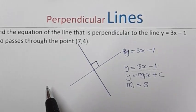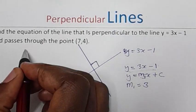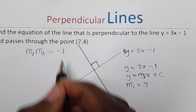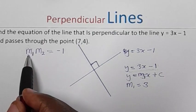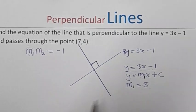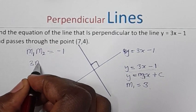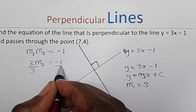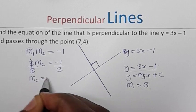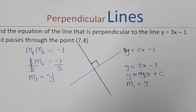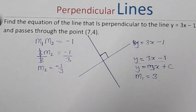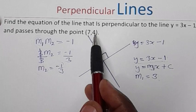For lines that are perpendicular to each other, when you multiply the first gradient by the gradient of the second equation, you get negative 1. So we have 3 × m2 = -1. Dividing both sides by 3, m2 = -1/3. That is the gradient of the second equation.